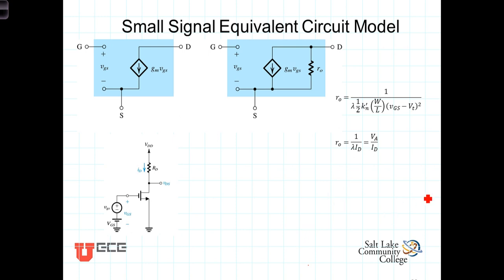The small signal circuit model is almost complete. Up to this point, our discussion has not taken channel length modulation into account. We've assumed that I sub D was constant for all values of VDS greater than the overdrive voltage VGS minus VT — in other words, constant throughout the saturation region. We know from our discussions of channel length modulation that the current does, in fact, continue to increase as VDS increases.